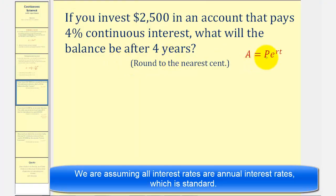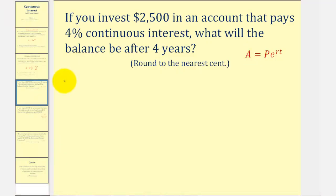So in this case, P, the principal or initial investment, is $2,500. The annual interest rate is 4%, which must be expressed as a decimal. 4% as a decimal would be 0.04.